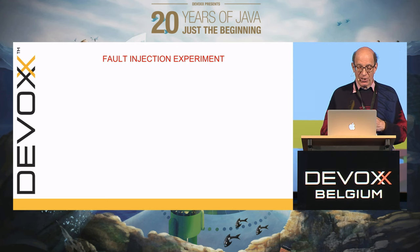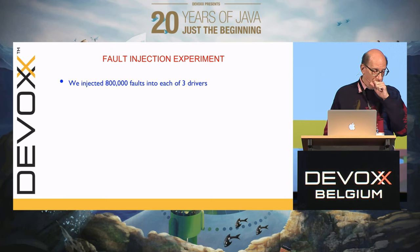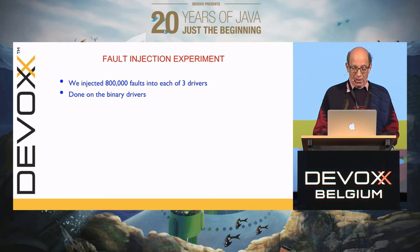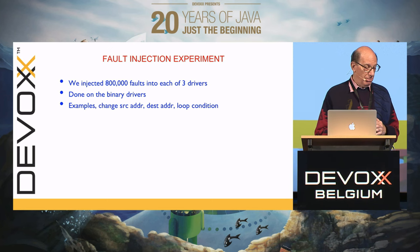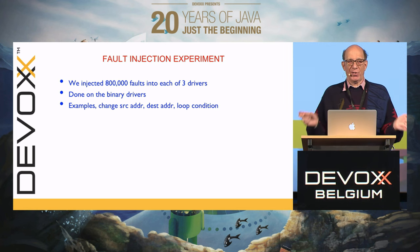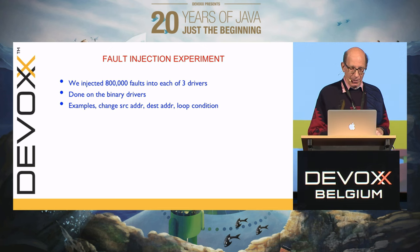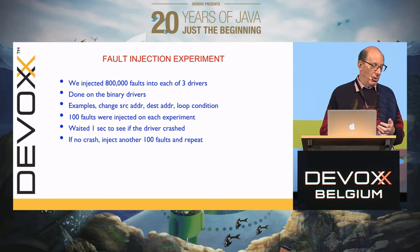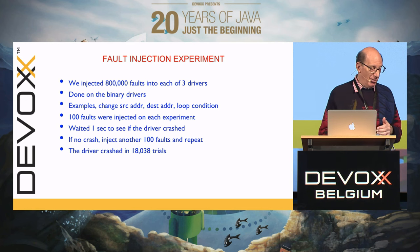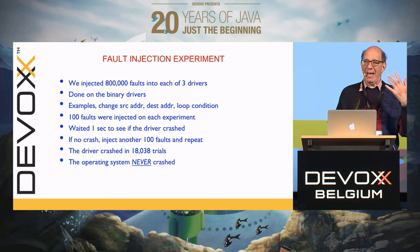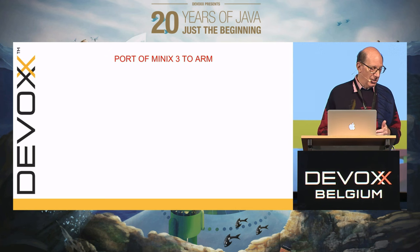We ran some fault injection experiments. We injected 800,000 faults into each of three Ethernet drivers at runtime, making changes that mimicked programmer errors — swapping source and destination, changing branch-less-than to branch-less-than-or-equal. We injected 100 faults, waited about one second to see if it died, then injected another 100, and kept going. We were able to crash the driver 18,000 times — but the operating system never crashed.